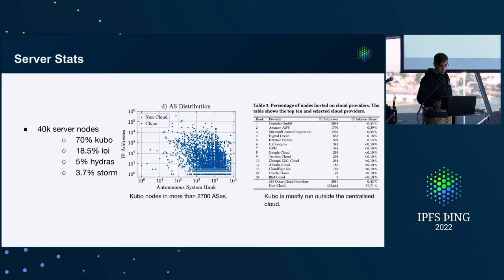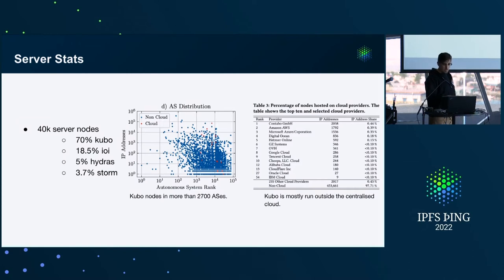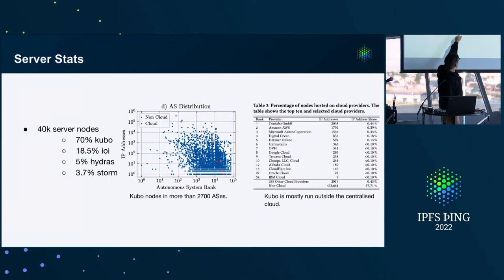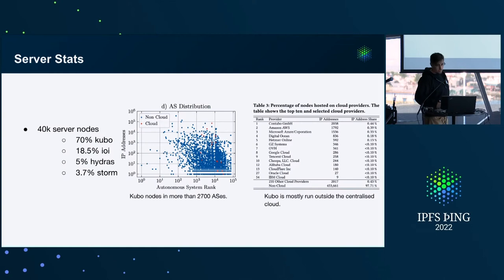Some high-level stats about the nodes on the network: we've got good distribution across autonomous systems — those are groups of IP addresses used for BGP routing — and good distribution across cloud providers. These are the user agents we see. I actually don't know what IOI is; that's a new one. So 70% is Kubo, and 5% are the Hydras, which I'll talk about in a second.